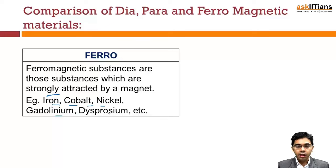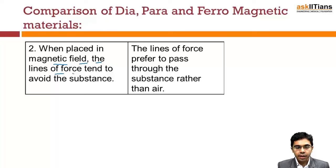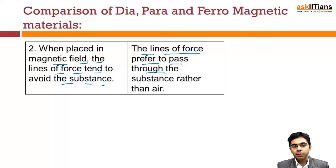Gadolinium is also a ferromagnetic material. When a diamagnetic material is placed in a magnetic field, the lines of force tend to avoid the substance. For paramagnetic materials, the lines of force prefer to pass through the substance rather than through air.